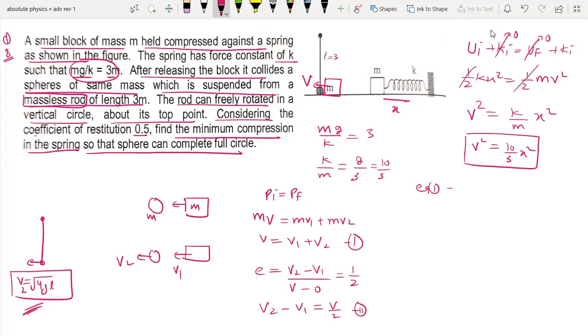From these two equations, 2V2 is equal to 3V by 2. This V2 value is equal to 3 by 4 into V. Squaring, so V2 square equal to 9 by 16 V squared.